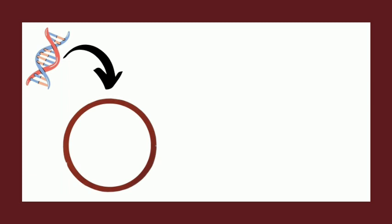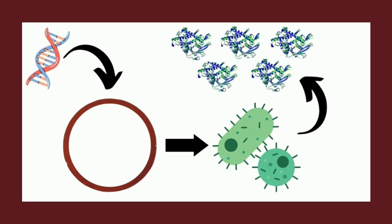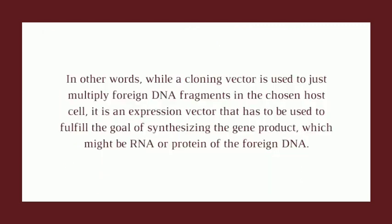If a foreign gene is cloned into any standard vector and introduced into a host cell, it may not necessarily produce a significant amount of the recombinant protein, as proper expression and synthesis of a product is brought about by a precise set of signals. In this light, special vectors were designed to accomplish this goal, which were aptly termed expression vectors. While a cloning vector is used to just amplify foreign DNA fragments in the chosen host cell, it is actually an expression vector that has to be used to fulfill the goal of synthesizing the gene product, which might be RNA or protein of the foreign DNA.